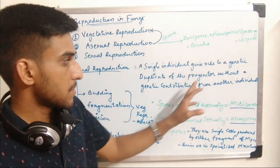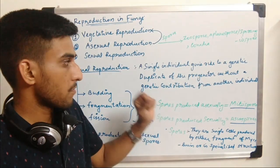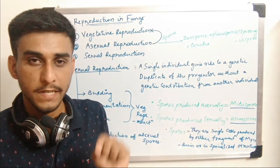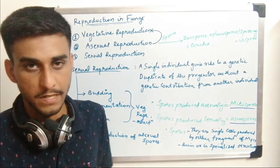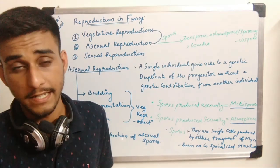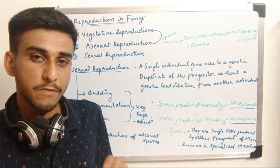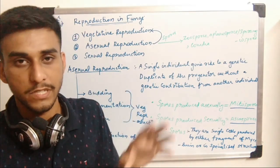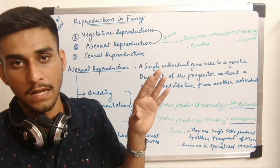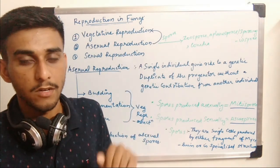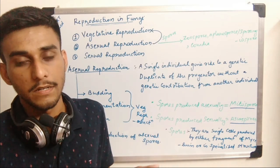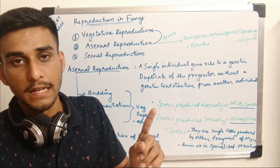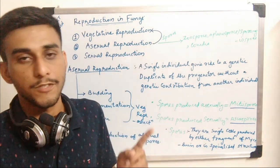The definition of asexual reproduction: a single individual gives rise to a genetic duplicate of the progenitor without genetic contribution from another individual. Only a single individual is involved, contributing only its own genetic composition. There is no genetic combination from another individual — an exact copy of the progenitor is made.